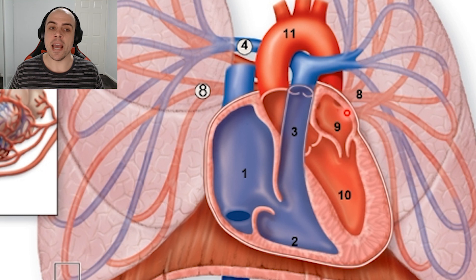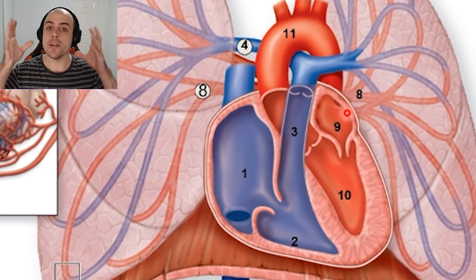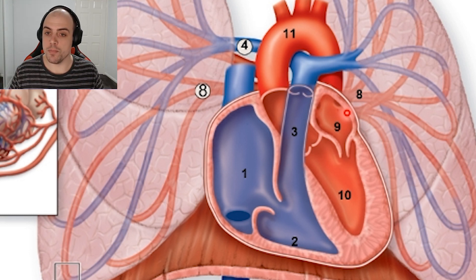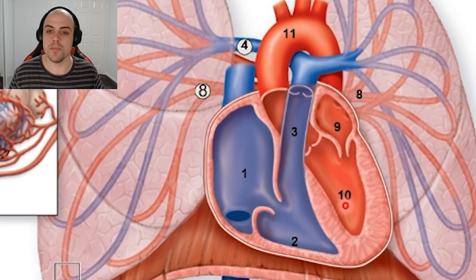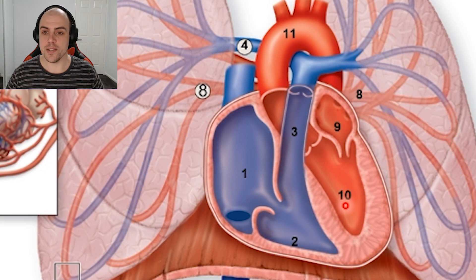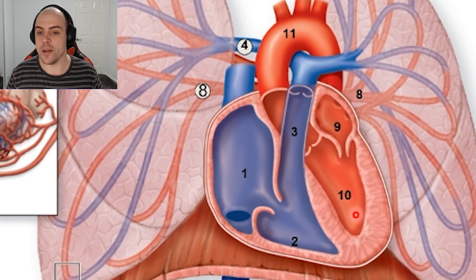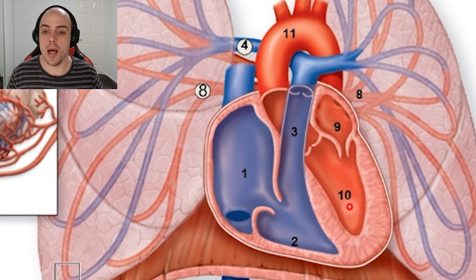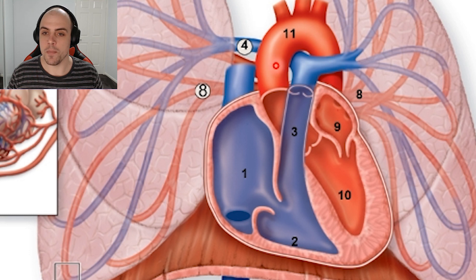From our left atria, the atria constricts and pushes blood down into the left ventricle. The left ventricle then constricts and pushes blood up through the aortic semilunar valve and out to the aorta.